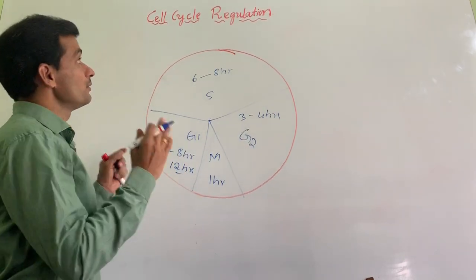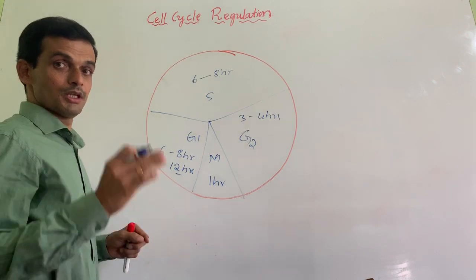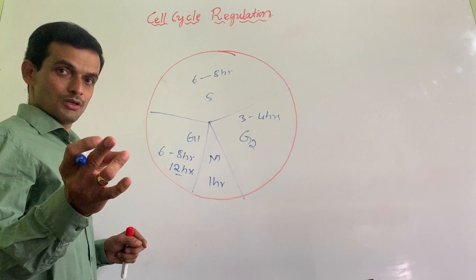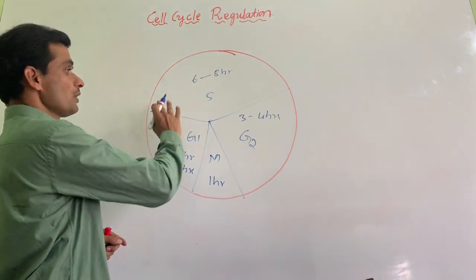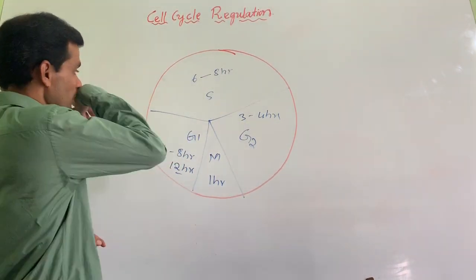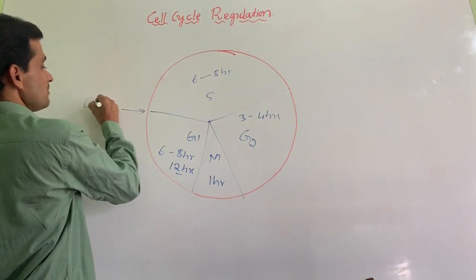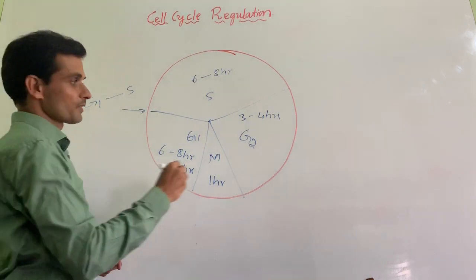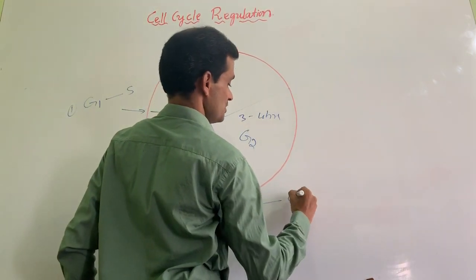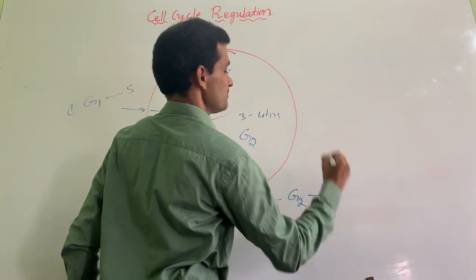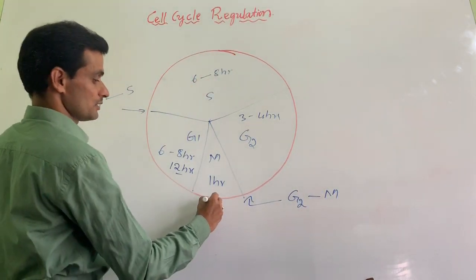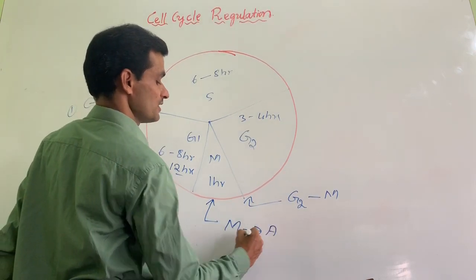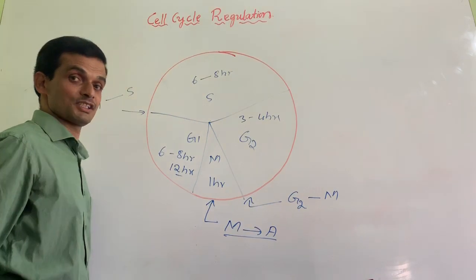Where is the regulation? Where is the control? A dividing cell of bone marrow or skin or zygote will have control at three different points. One is G1-S checkpoint, this is one checkpoint. Another one is here, G2-M checkpoint, and the third checkpoint is here, that is metaphase-anaphase checkpoint or spindle assembly complex.